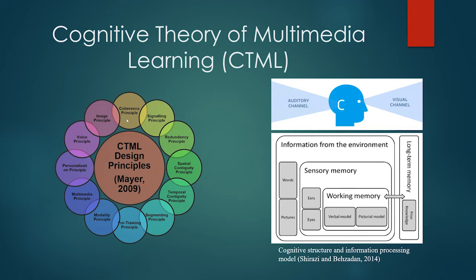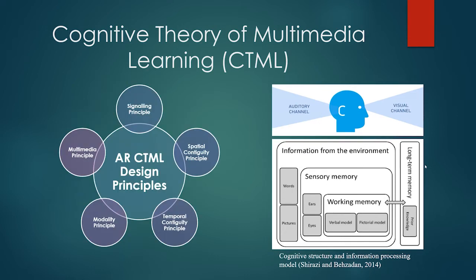Mayer has 12 design principles: coherence, signaling, redundancy, spatial contiguity, temporal contiguity, segmenting, pre-training, modality, multimedia, personalization, voice, and image. However, for this study, only five design principles are used, based on other studies applying CTML as their learning theory. These five principles are: signaling, spatial contiguity, temporal contiguity, modality, and multimedia, and they are used for the framework.